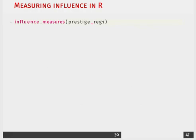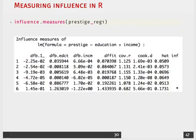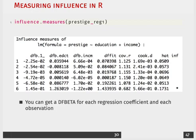We can very easily get these different measures by using the influence measures function in R. This is going to give us our df betas, as well as our Cook's distance, our hat values, etc. You can get a df beta for each regression coefficient and each observation.